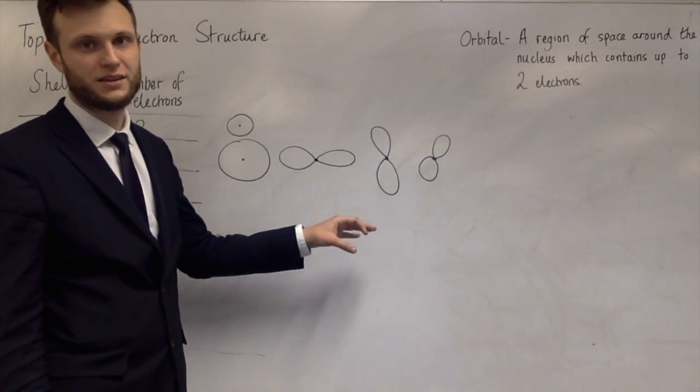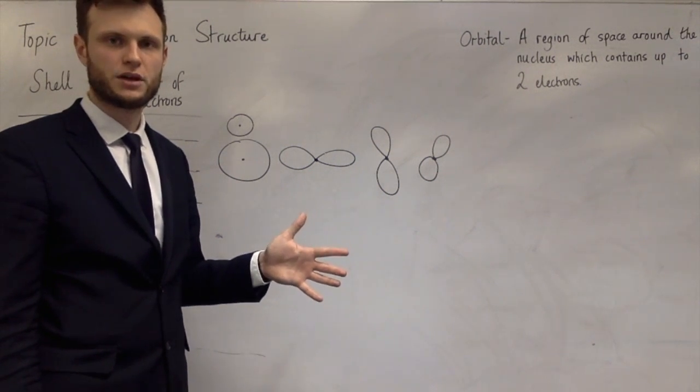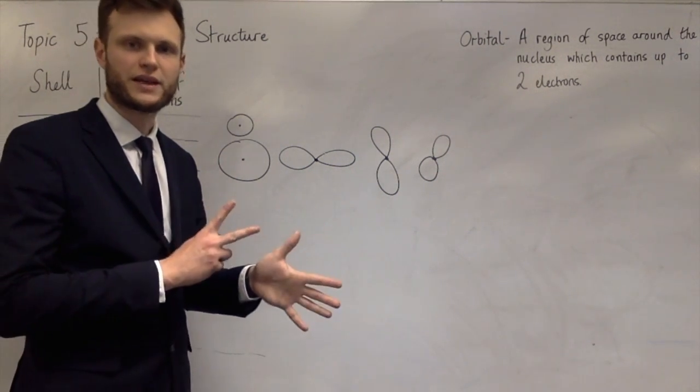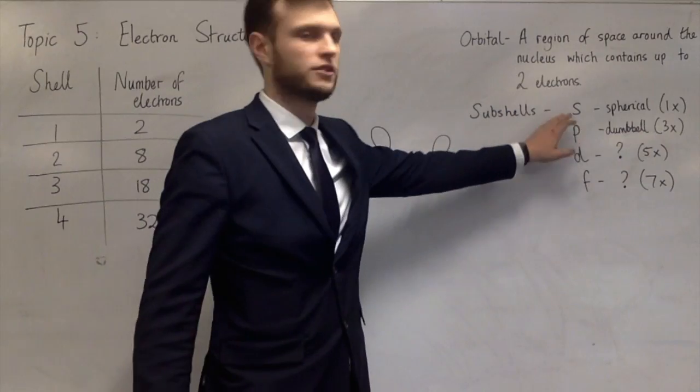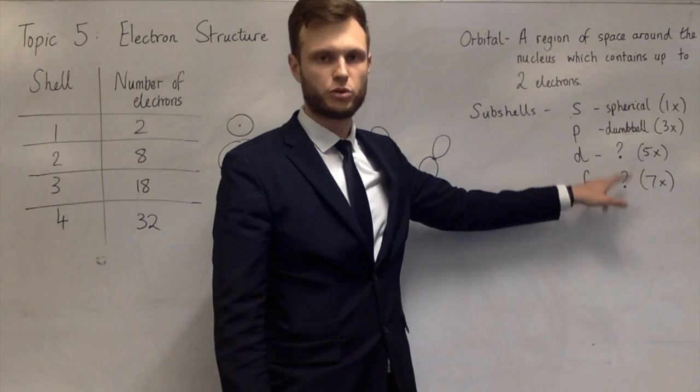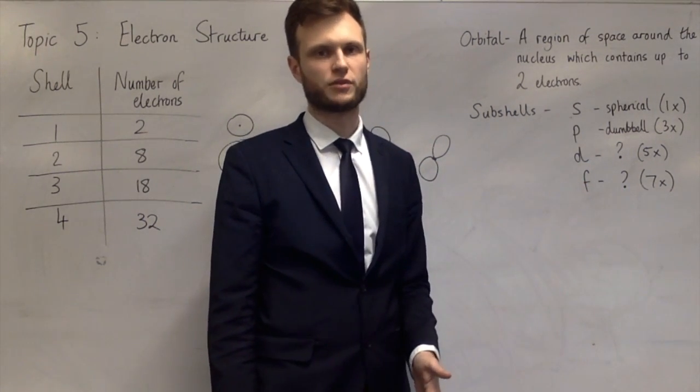The next one is called a D, and there are five different D orbitals in a D subshell. And the last one is F, and there are seven different F orbitals in an F subshell. So S, P, D, and F. I'll put question marks here, not because they're not known, but because you don't need to know the shapes of them.